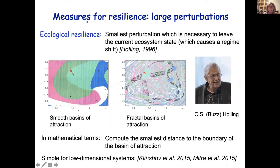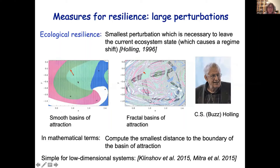One idea for studying shock tippings was formulated by Buzz Holling long ago in resilience theory: ecological resilience is the smallest perturbation necessary to perturb the system such that it leaves the current ecosystem state and causes a regime shift or critical transition. In mathematical terms, it is nothing else than computing the smallest distance to the basin boundary. This computation is quite simple in a low-dimensional system, but not simple in a high-dimensional system — you need special methods because you cannot probe every direction in state space.